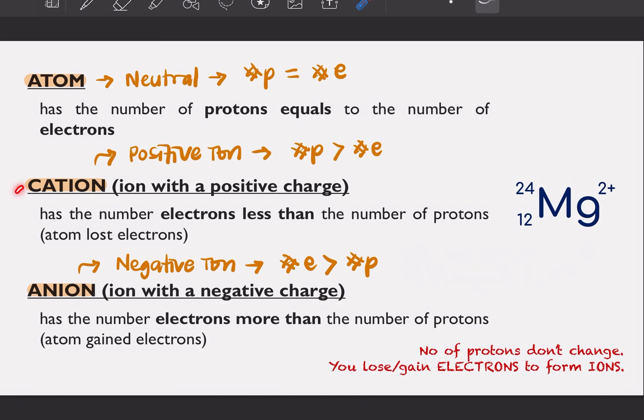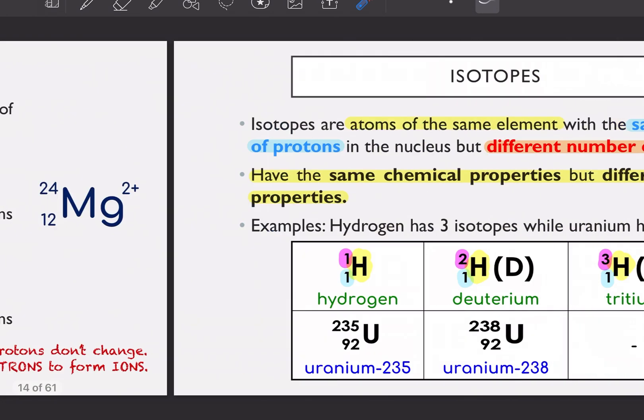So basically for your cation and anion ni, the number of protons don't change. So sebab proton awak ni tinggal dalam nucleus. So dia susah awak nak buang atau nak tambah. What is actually forming your cation or anion is the loss or gain of electrons from your atoms. Maksudnya number of electrons bila awak ada charge ni, number of electrons yang berubah. Bukannya number of proton. Number of proton is fixed.